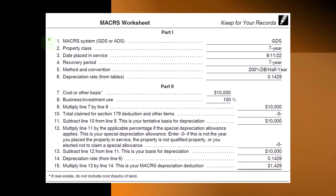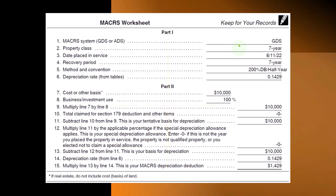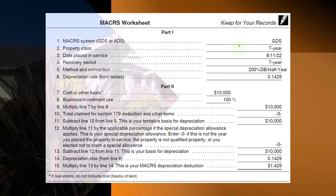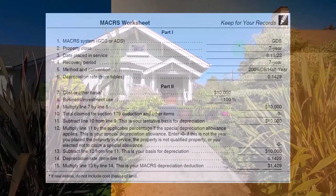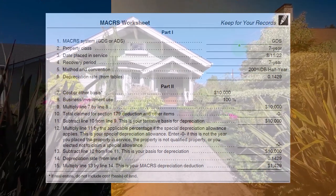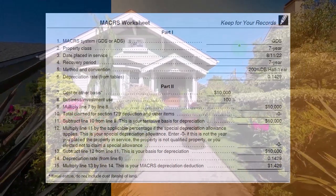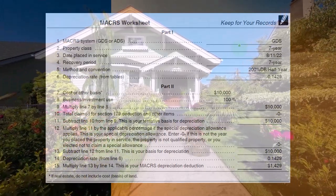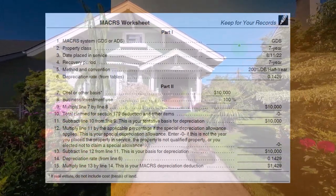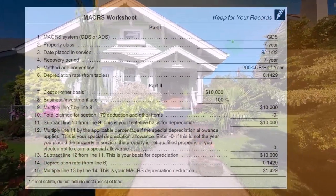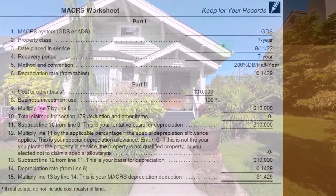All right, so the MACRS system — it's the GDS system, and that's the default unless we choose otherwise. The property class is seven years. We know that's the case because we're using the GDS system instead of the ADS, and that's what they force us to do.